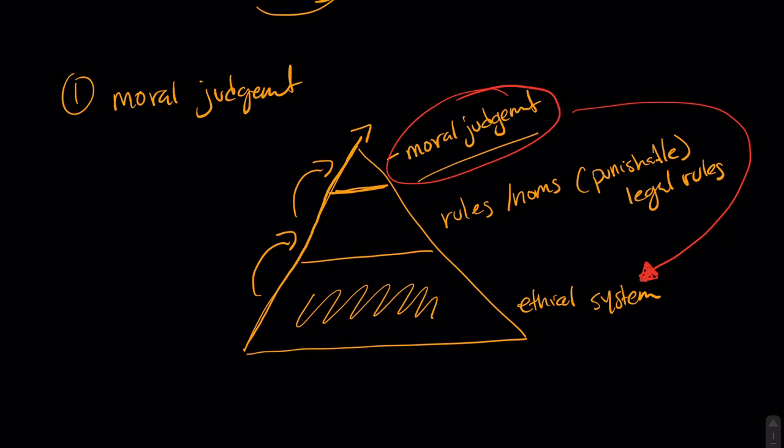Or your ethical system may be based on utility—a system that we may call utilitarianism—which says essentially that the greatest good for the greatest number of people is more important than the greatest good for the smallest number of people.